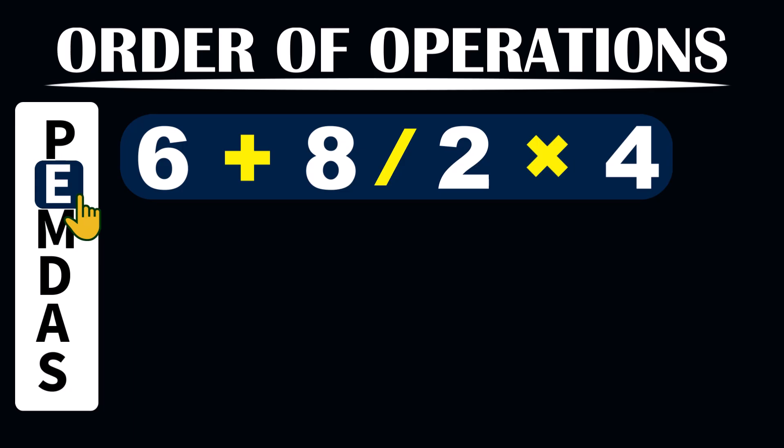The next operations, multiplication and division, have equal priority. So, if you have both multiplication and division, the order goes from left to right. In our example here, we have both multiplication and division. And the division is more to the left than the multiplication. So, we first divide 8 by 2, then multiply the result from that by 4.